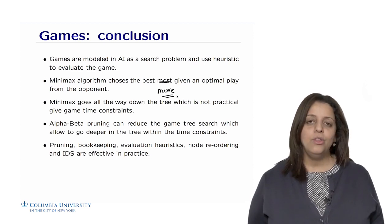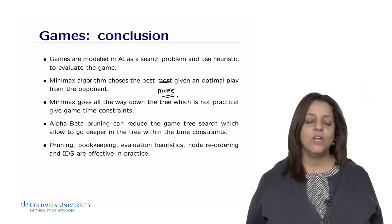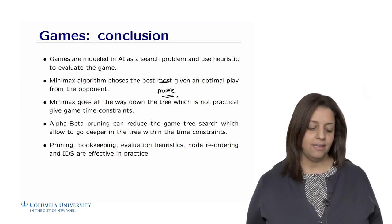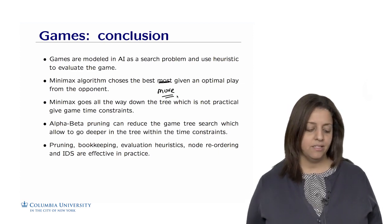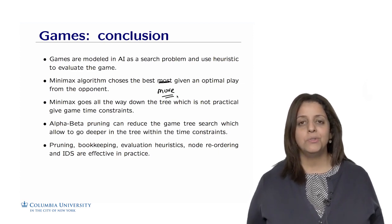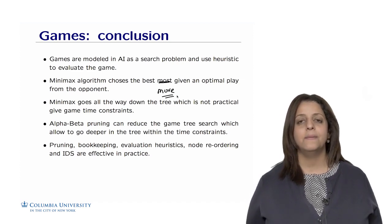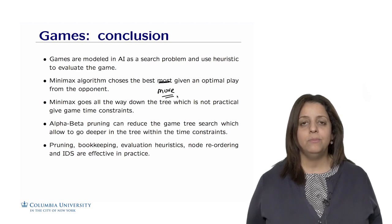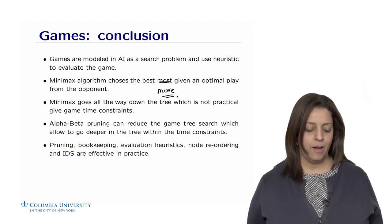We've seen that the minimax algorithm chooses the best move given optimal play from the opponent. Minimax goes all the way down into the leaves, which is impractical given time constraints. We often use strategies such as alpha-beta pruning that allows to reduce the search space by pruning parts of the game tree. This allows us to go deeper in the tree with the same time constraints, which makes a big difference when we search for the best possible strategy.